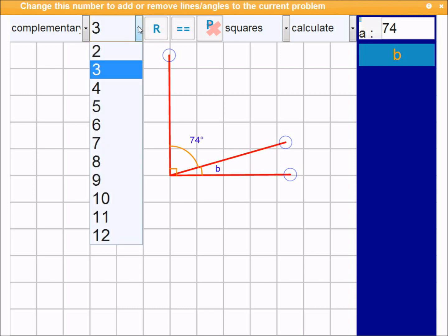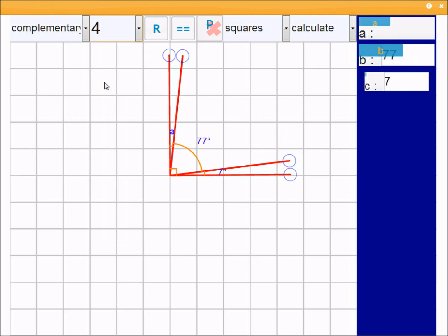You can also change how many lines there are. So I'm going to change this to 4. Now you'll see you get two of the angles given to you, 7 and 77, making 84 degrees, which means this A must be 6 degrees. I'm correct.